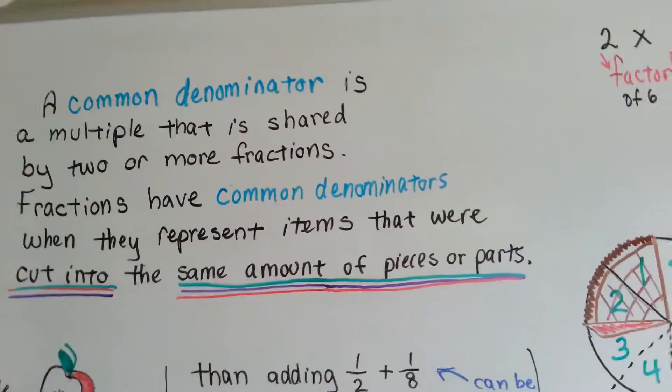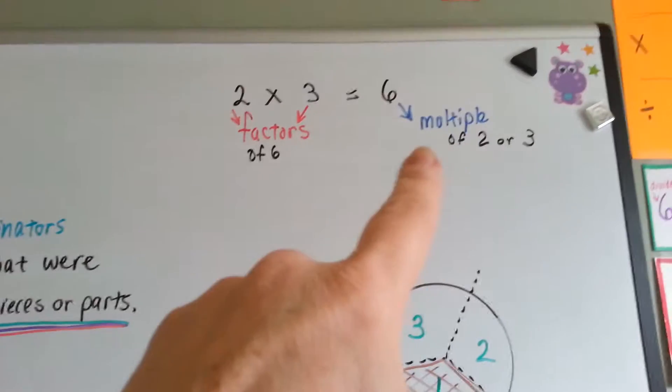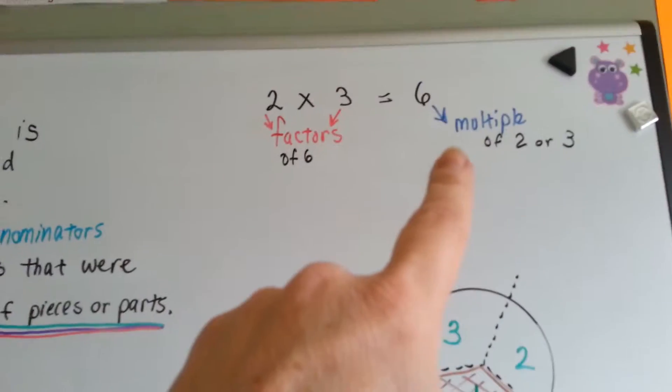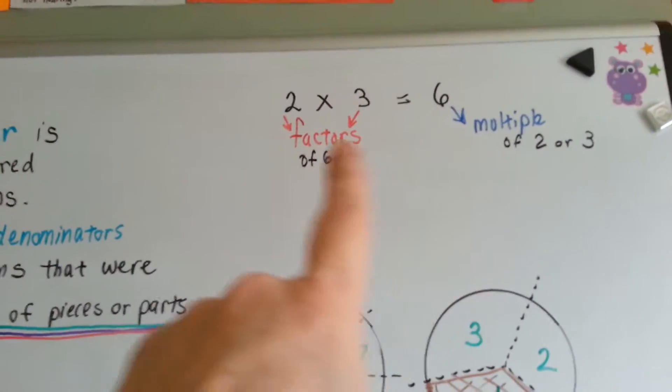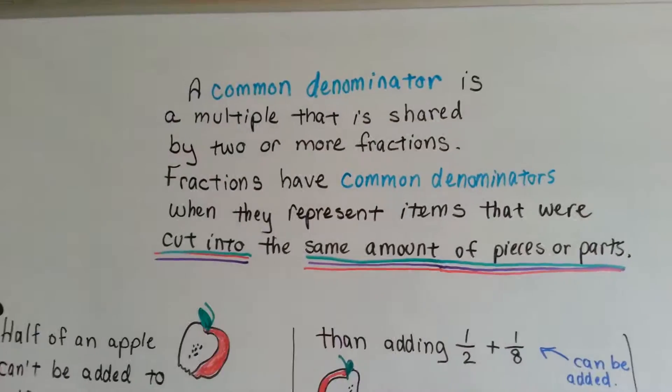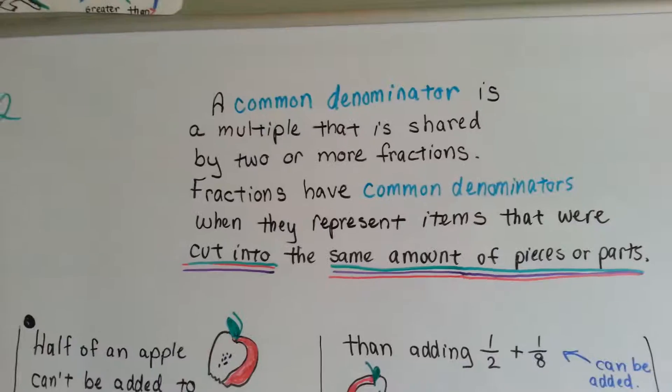Remember, a multiple is like the answer in a multiplication problem. This 6 is the multiple of the 2 and 3, so the common denominator is a multiple that is shared by two or more fractions.